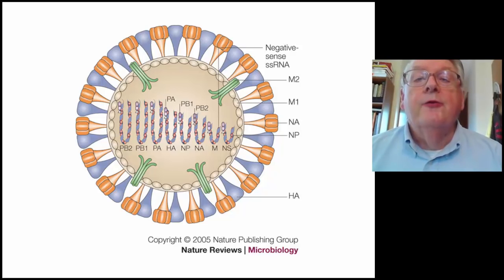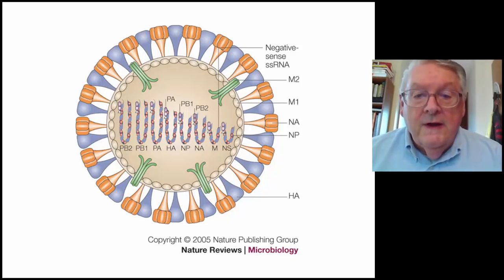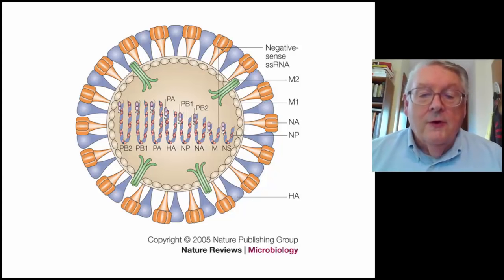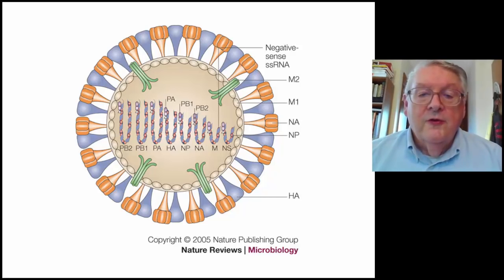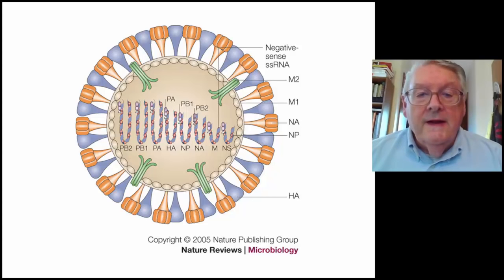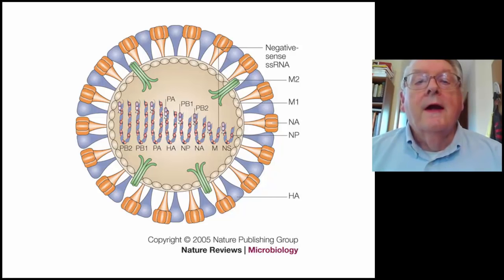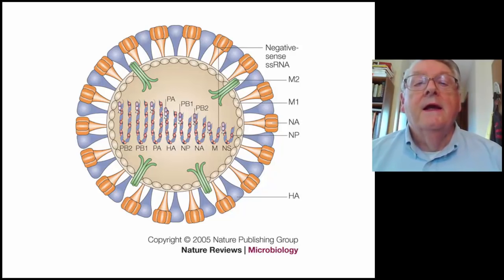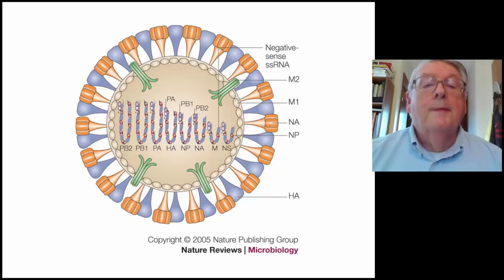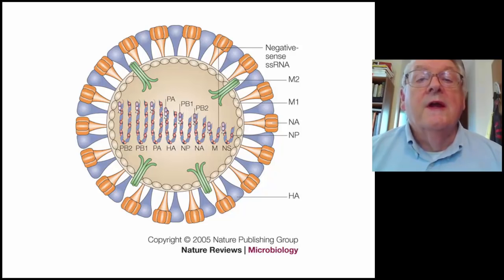Inside, the first protein is the matrix protein, the M1 protein. This is one of the major proteins of the virus particle and coats the complete inside of the lipid envelope. The M2 protein is an ion channel, which is involved in uncoating the virus inside the cell. As we enter the interior of the virus particle, you see there are eight ribonucleoproteins labeled PB2, PB1, PA, HA, NP, NA, M, and NS. These ribonucleoproteins contain negative-stranded RNA and multiple copies of the NP protein, the nucleocapsid protein.